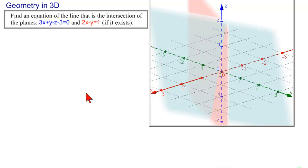The second plane, 2x minus y equals 1. And we can see that there's a line of intersection. The only time there will not be a line of intersection is if the planes are parallel. In this case, they're not. So there's our line of intersection, and we want to find an equation of this line.